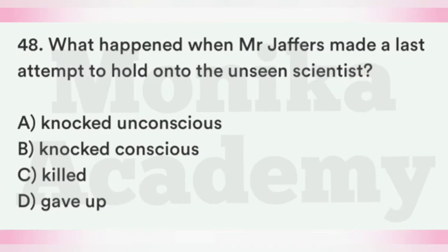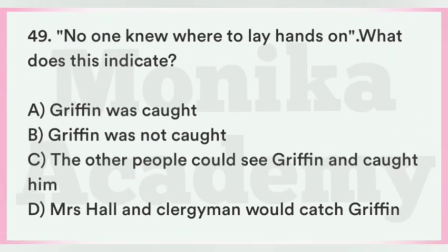Question 48: What happened when Mr. Jeffers made his last attempt to catch the unseen scientist? Option A: Knocked unconscious — Griffin ने Mr. Jeffers पर पीछे से attack किया और वो faint हो गए. Option B: Knocked conscious. Option C: Killed. Option D: Gave up. The correct answer is A, knocked unconscious — Jeffers ने last attempt किया Griffin को पकड़ने का, Griffin ने पीछे से attack किया और Mr. Jeffers faint हो गए.